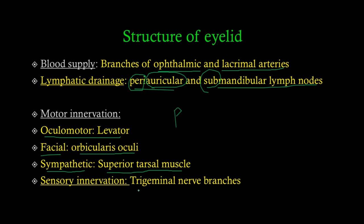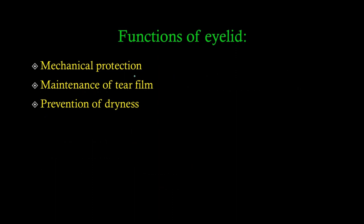For sensory innervation, the trigeminal nerve provides sensory supply — specifically the ophthalmic and maxillary divisions, though we won't go into sub-branches here. Finally, the functions of the eyelid: mechanical protection from trauma, and maintenance of the tear film. The glands we studied produce oily secretions that deposit on the eye and maintain a uniform, continuous tear film, preventing dryness.